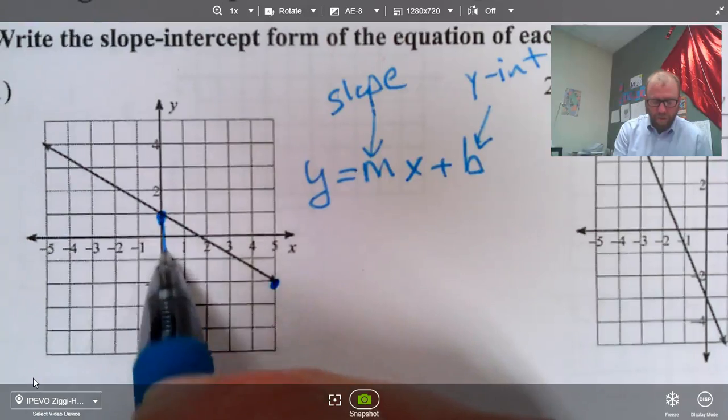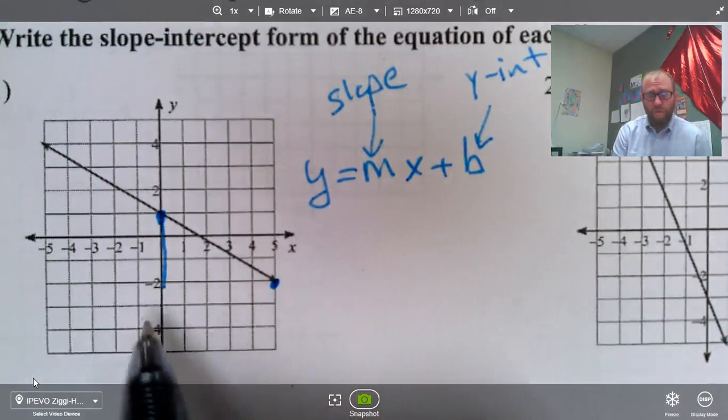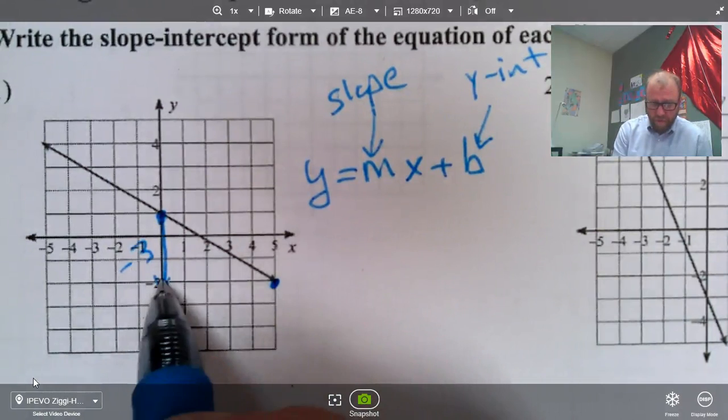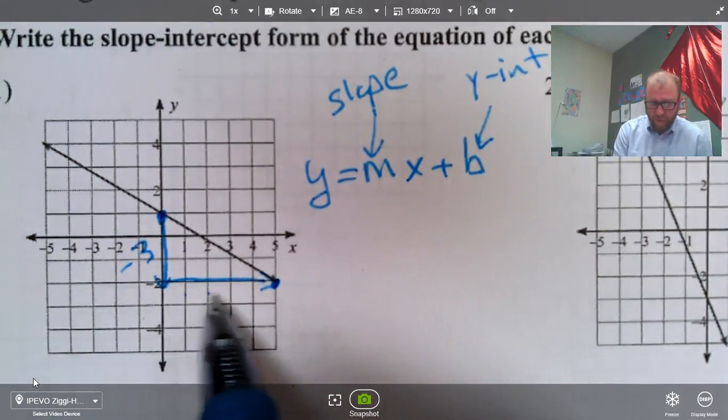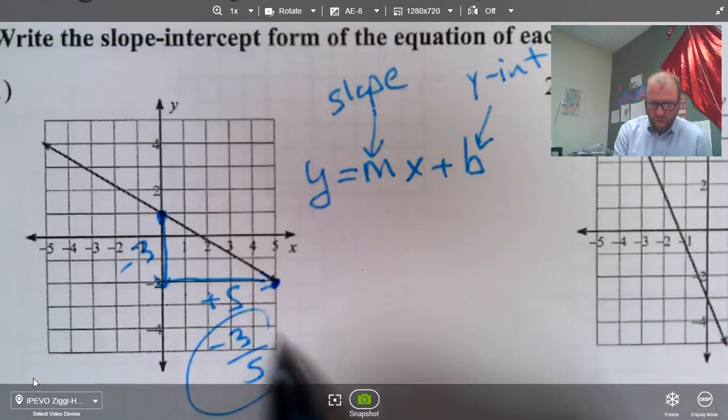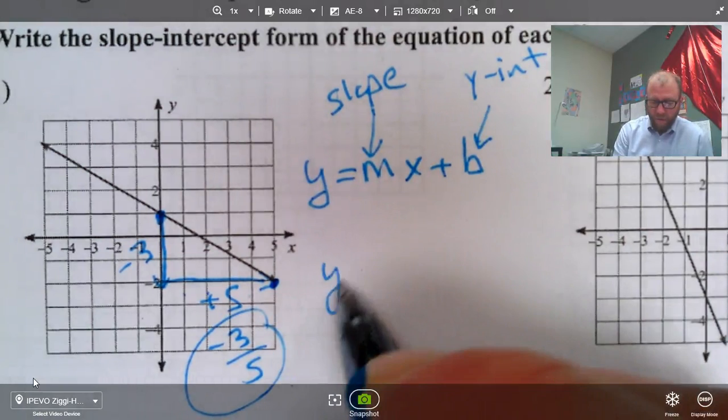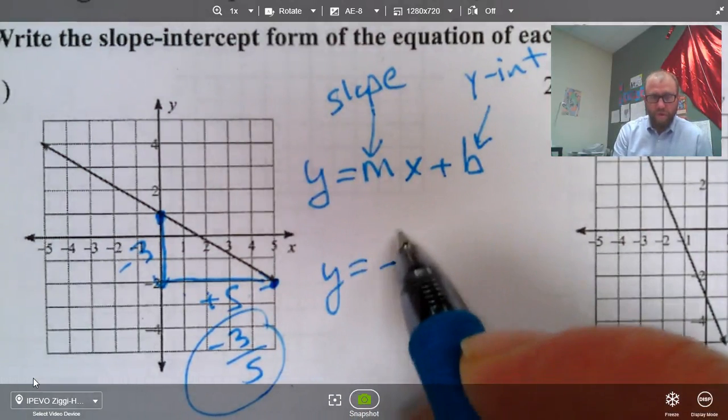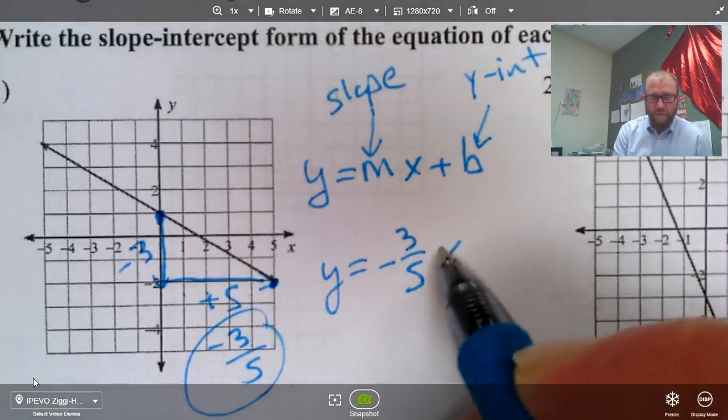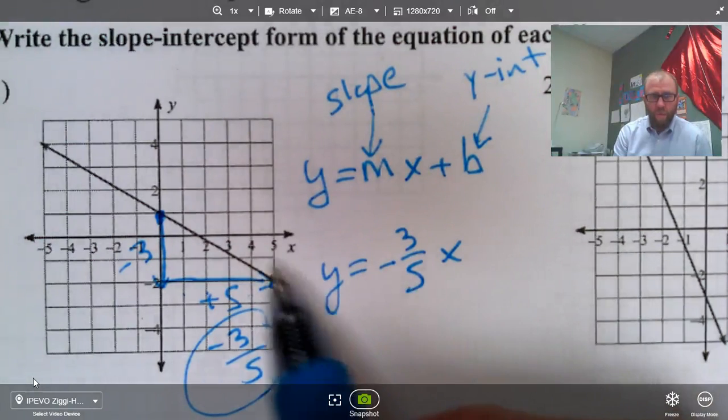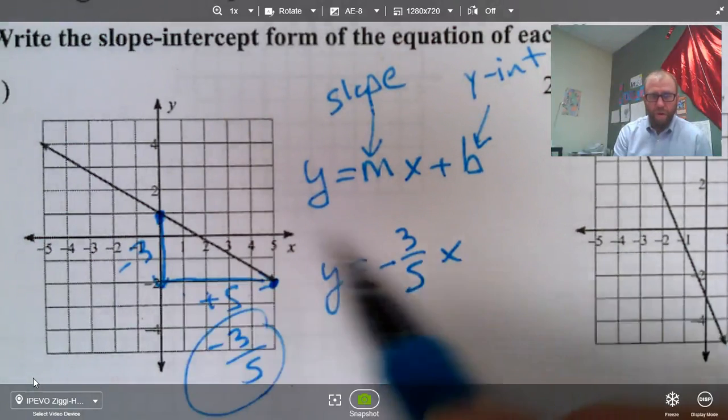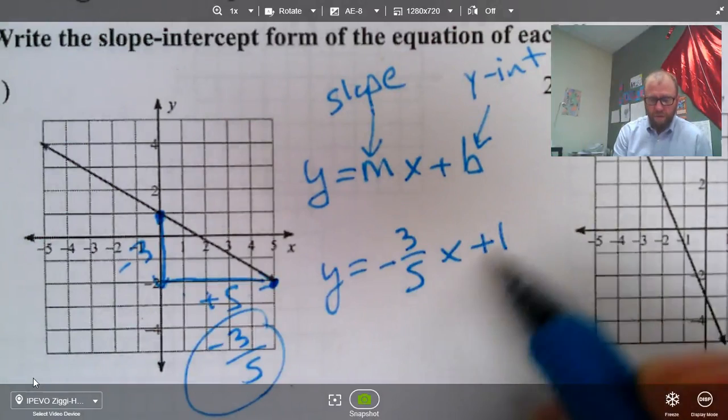So we've got to pick points that have coordinates we know. So this is down three and forward, one, two, three, four, five. So negative three-fifths. So we have y equals negative three-fifths x. And our y-intercept is one on the y-axis, so that's one.